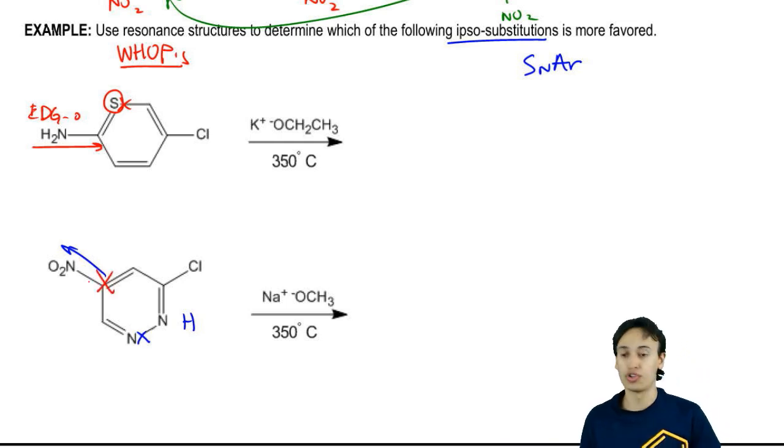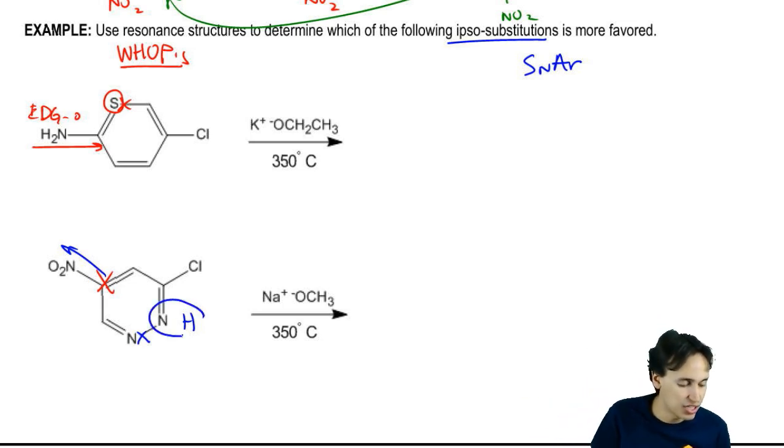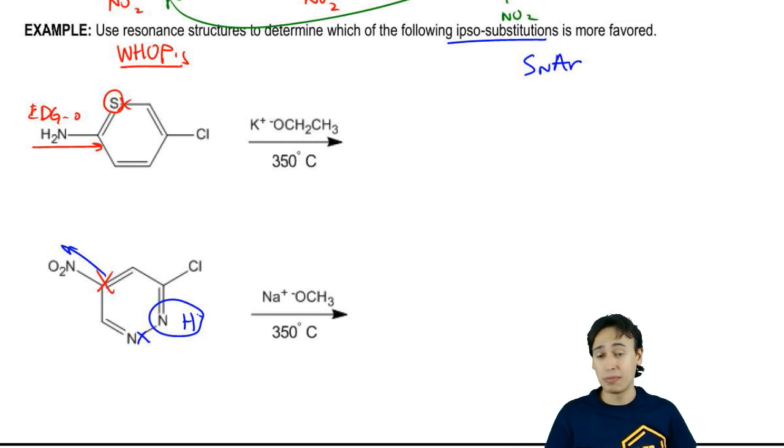Overall, two of these groups don't really help. The nitrogen on the meta and the withdrawing group on the meta don't really help because the resonance structure isn't going to hit those carbons. But I do have this one atom here that's going to make it more favored than the other because the other didn't have anything going for it. In fact, it had a bad group. This one at least has one good group and one good location.